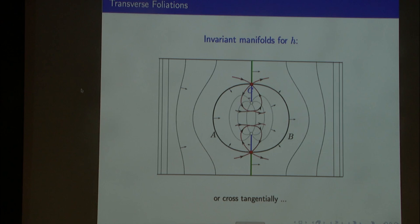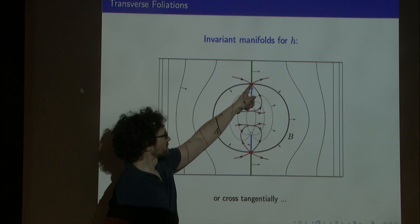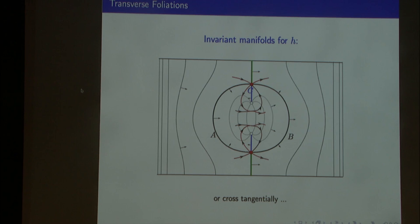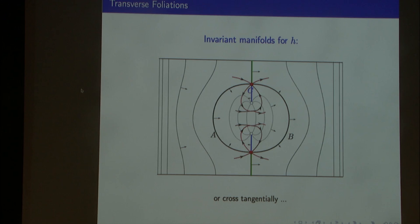It's great if you have transverse intersections — that allows you to embed horseshoes. If you have tangential intersections, there's work saying: if the tangent point is to first order you can do this, if it's finite order you can do that, and if it's infinite order you can do such and such. Results are more positive when intersections are between invariant manifolds of a single hyperbolic orbit — a homoclinic intersection — as opposed to a heteroclinic intersection. For everything I'm going to say, whether they intersect tangentially or transversely will actually be irrelevant.